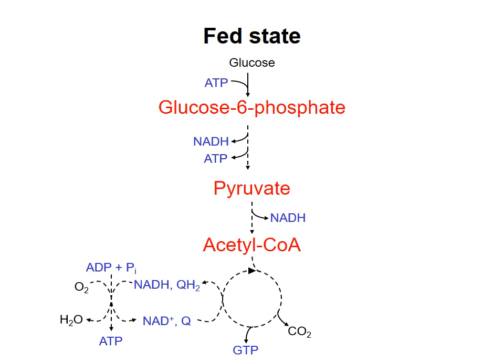I've put these processes in dashed lines because as a cell's ATP supply is replenished, glycolysis, the citric acid cycle, and oxidative phosphorylation will slow down. At the same time, some G6P will be stored in liver and muscle cells as glycogen, for use at a later time.